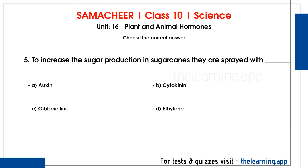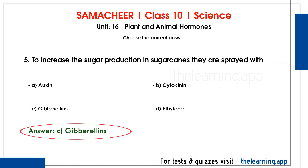Fifth question: To increase the sugar production in sugarcanes, they are sprayed with dash. Options are A) Auxin, B) Cytokinin, C) Gibberellins, D) Ethylene. Correct answer is option C, Gibberellins. When sugarcanes are sprayed with gibberellins, sugar production increases.